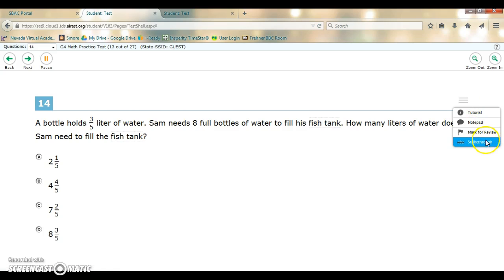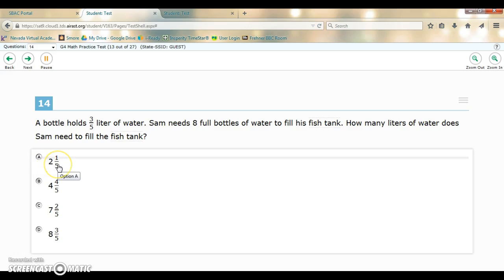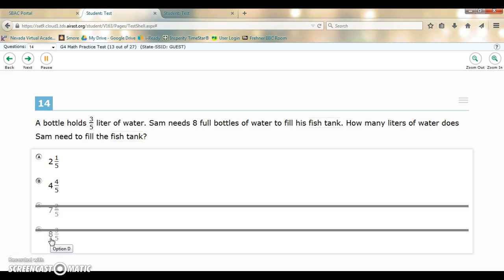Finally, I have the strikethrough option. This allows you to eliminate any answers you know it cannot be. So for this question, I know it cannot be seven and two-fifths or eight and three-fifths. In order to strike through, I just click on the options that I know it cannot be.